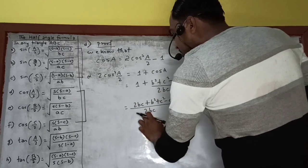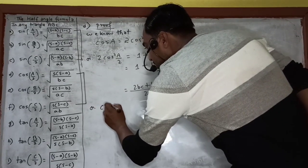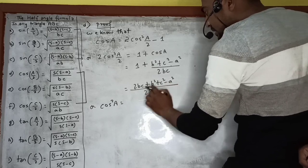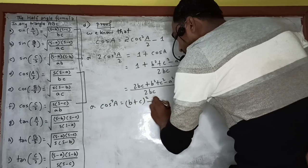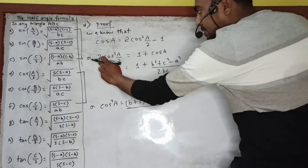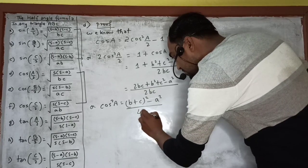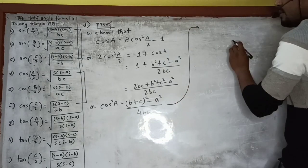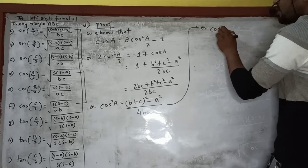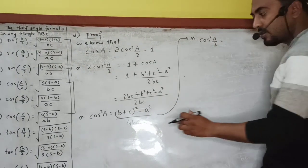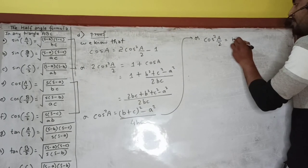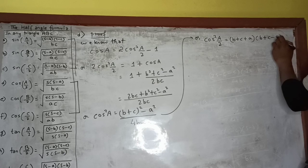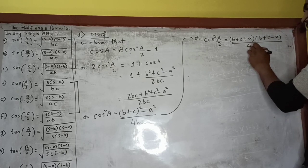Bringing the 2 across, cos²(A/2) = (B² + 2BC + C² − A²) / (4BC). Recognizing B² + 2BC + C² = (B + C)², this becomes [(B + C)² − A²] / (4BC). Factoring as a difference of squares: (B + C + A)(B + C − A) / (4BC).